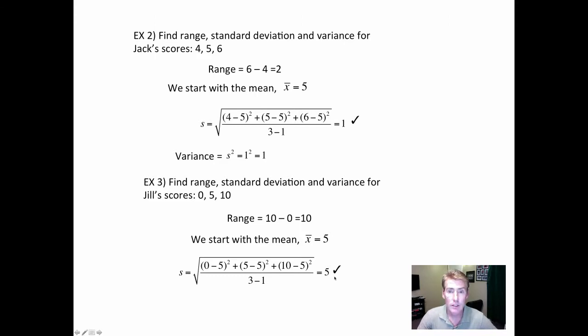So there's the standard deviation. As you can see by these little checkmarks, finally we found something that can tell the difference between them. Jack's scores are very close and compact—four, five, and six—standard deviation is very small: one. Jill's scores are off by, or they grow by five points each time, standard deviation larger. Finally, the variance: five squared is 25.